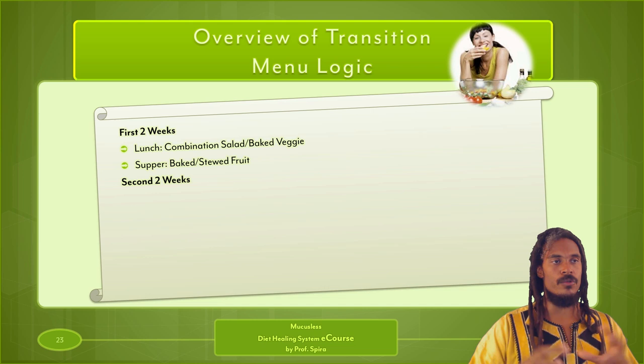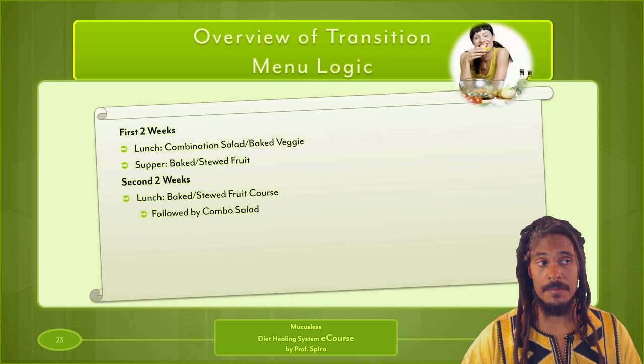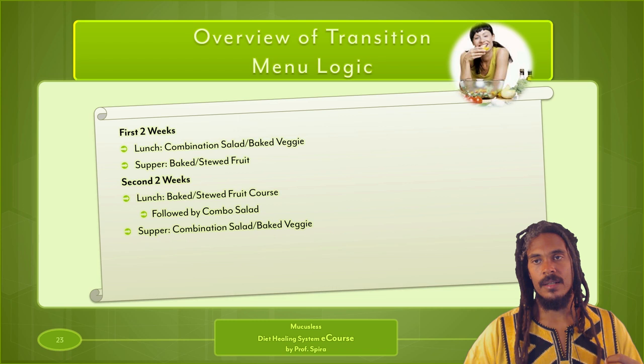For the second two weeks: lunchtime would be baked or stewed fruit followed by a combination salad — Ehret's two-course meal — and then supper would be a combination salad or baked vegetable. Notice how within that first month, the first two weeks have a vegetable meal at lunch and a fruit meal in the evening, then the second two weeks switch it: fruit in the afternoon along with the salad, and the vegetable in the evening.